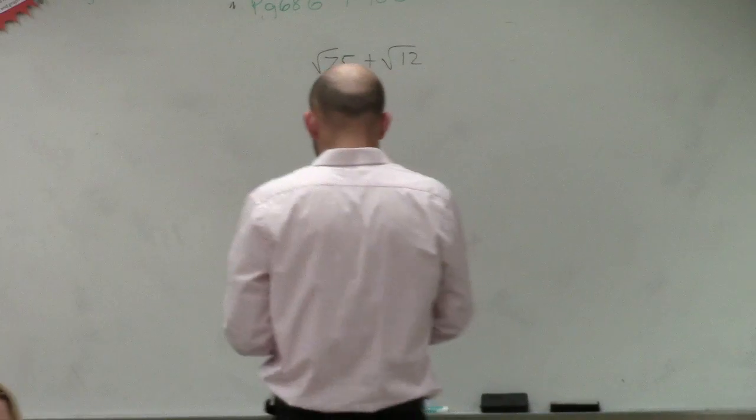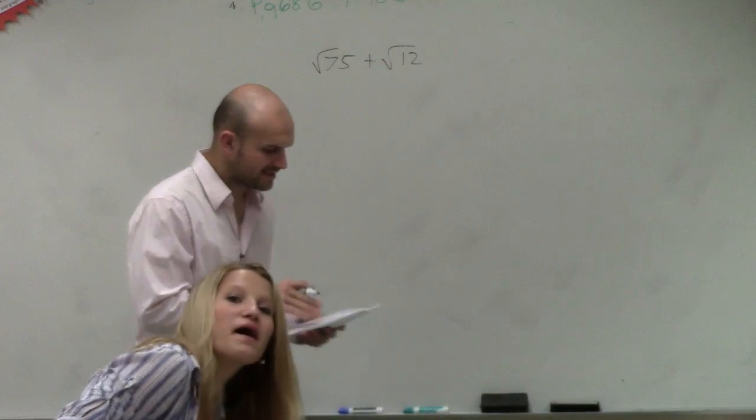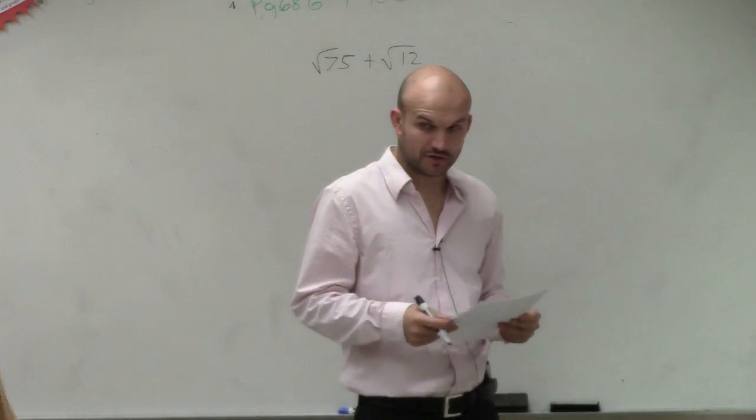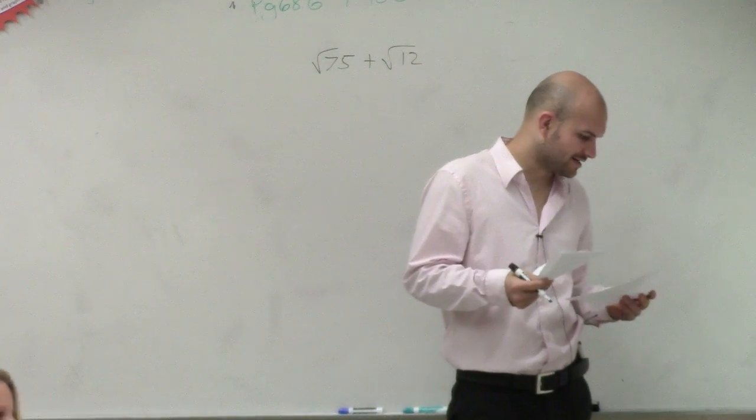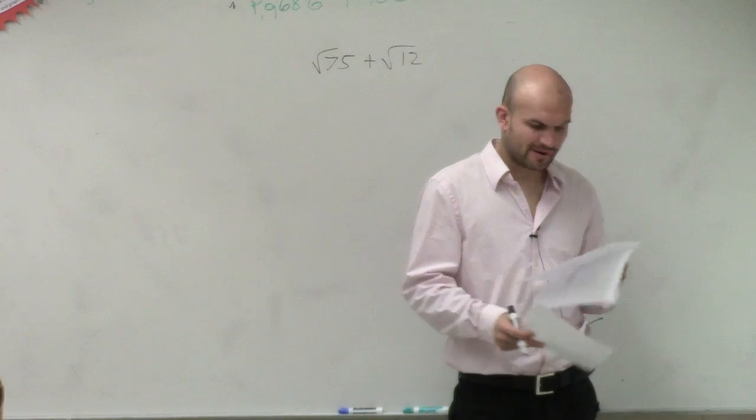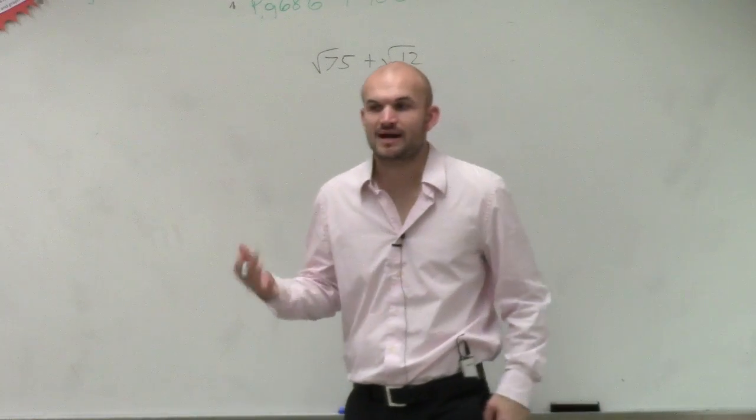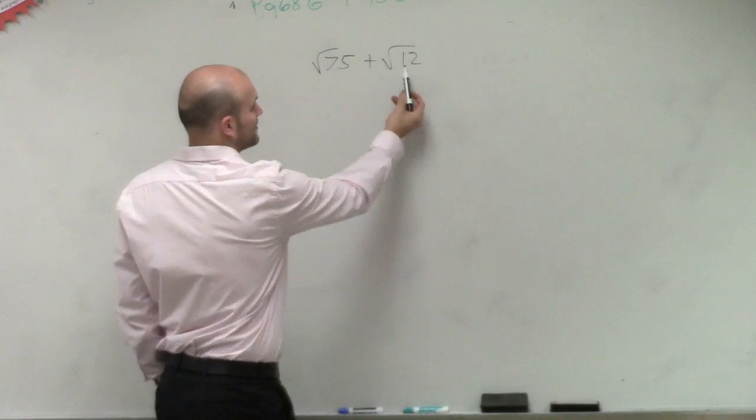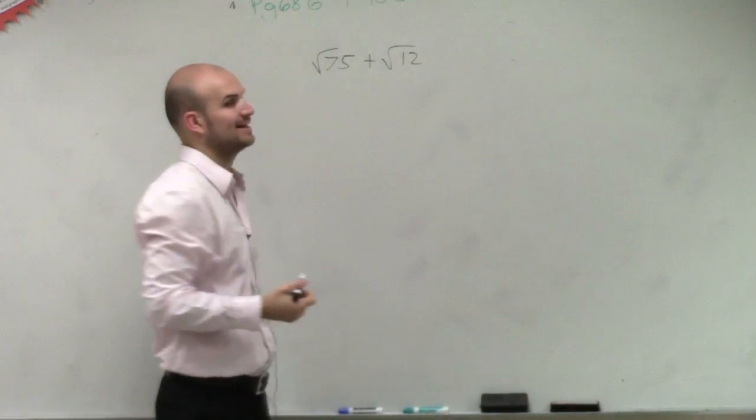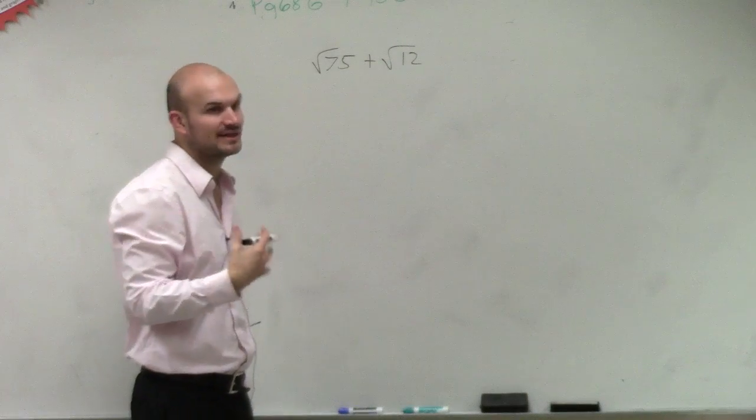For number 28, remember when we're looking at a problem like this, what we're going to want to make sure we do is we want to make sure that I'm looking at number 28. We want to make sure we can simplify our radicals. Because remember, adding and subtracting radicals, we can only add or subtract when our radicands are exactly the same. So right now, we do not have two radicands that are the same. So we need to simplify them, see if we can.